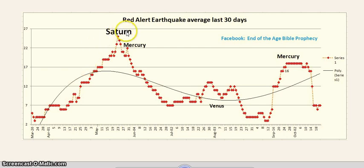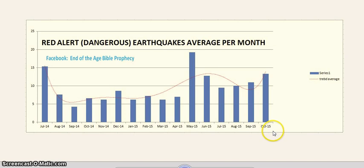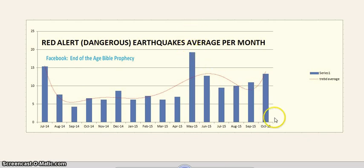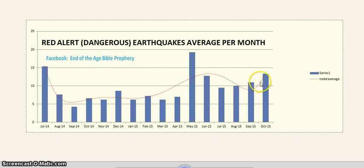That is when Saturn buzzed us — when we moved between Saturn and the Sun — and the electromagnetic energy was obviously a lot greater and brought on the earthquakes. As for the average per month, you can see May here when we got buzzed by Saturn, where the earthquakes were high. Obviously we're in October here, but the earthquakes are still high, and there you see a trend line moving up.